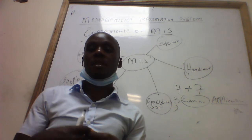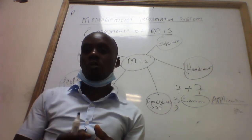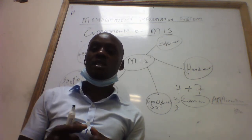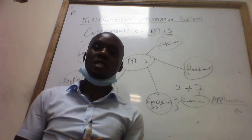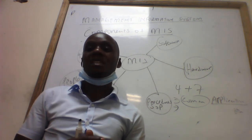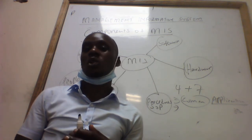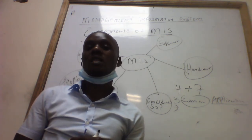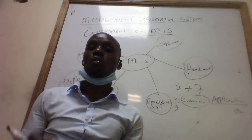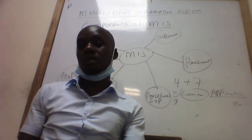Another role is improved processing. This system produces information that facilitates easy performance of activities. Employees, when given knowledge, can easily perform certain activities. At the knowledge work level of a firm, knowledge workers and data workers aim to produce knowledge that improves the quality of services and products that the firm provides.